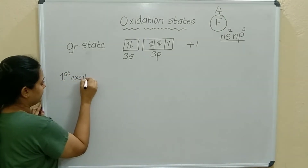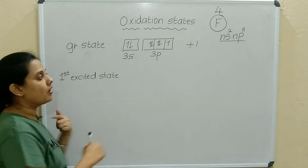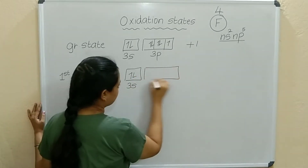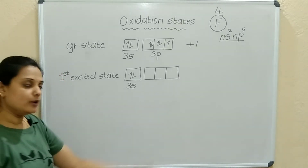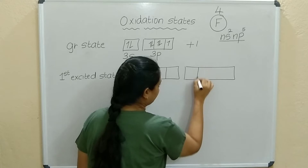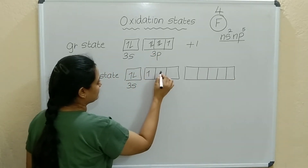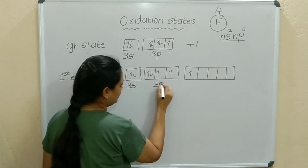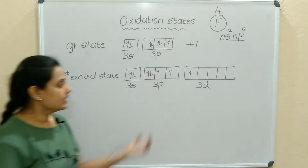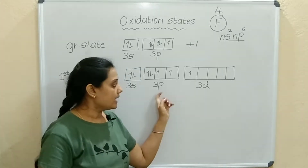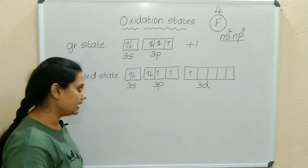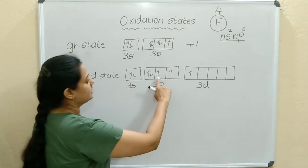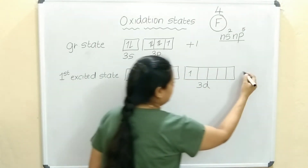In the first excited state, electrons jump one by one — you cannot make all electrons jump at a time. The 3S electrons remain as they are. One electron from a paired P orbital jumps to the 3D orbital. We need to check whether the 3D orbital exists — in Chlorine and other elements of the group, the D orbital does exist. This gives 3 unpaired electrons, so a plus 3 oxidation state.